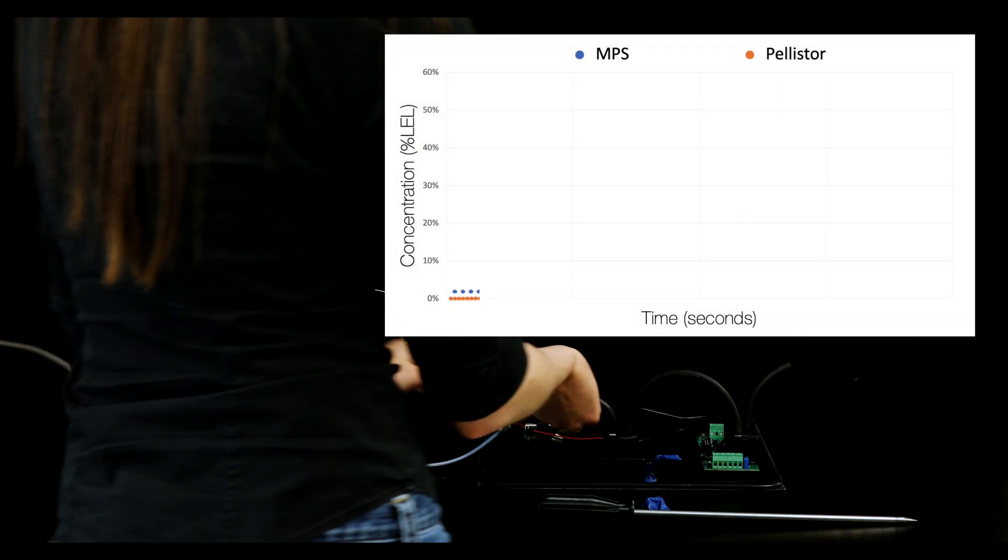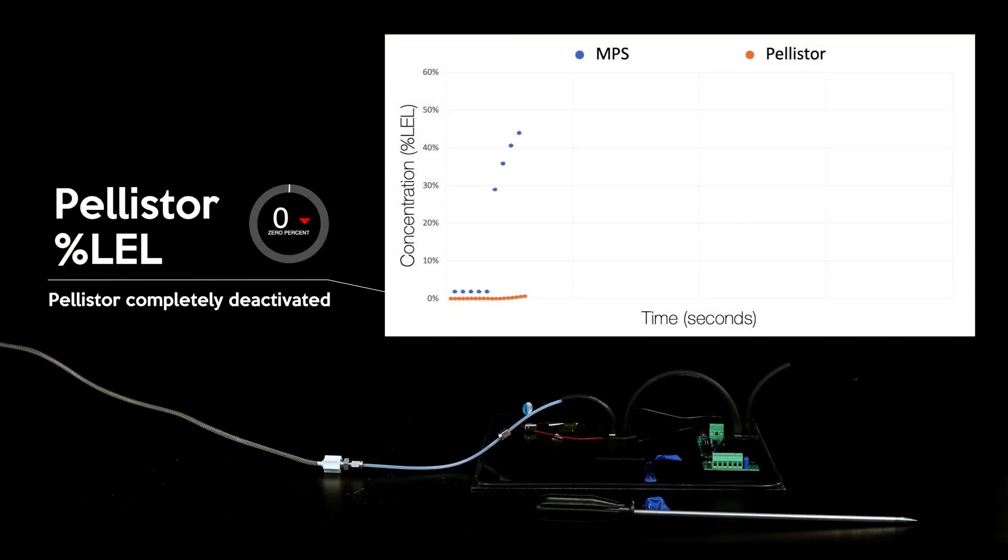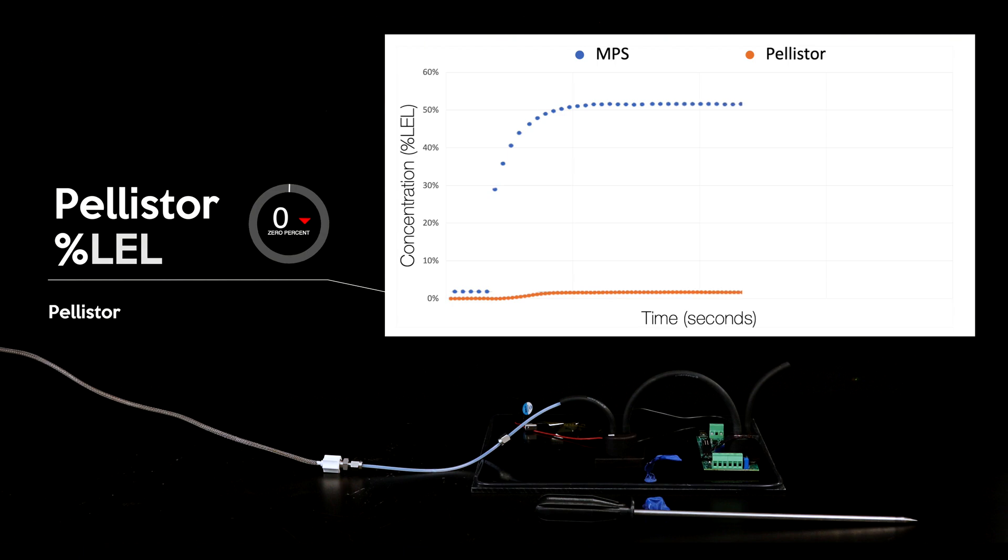A quick bump test with 50% LEL methane shows that the pellistor has been completely deactivated and doesn't respond to methane. This is due to a permanent reaction between the hot catalyst and the silicones, which has ruined the sensor.